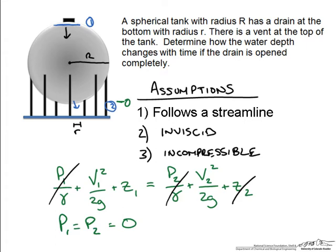We know that the change in fluid height is going to change with time, so we write that as dh/dt, and it is negative because we set our axis in the positive direction. The last unknown is the velocity at point 2. We note that the velocity at point 1 will be much lower than at point 2, because we assume the diameter at point 1 is much greater than that at point 2.